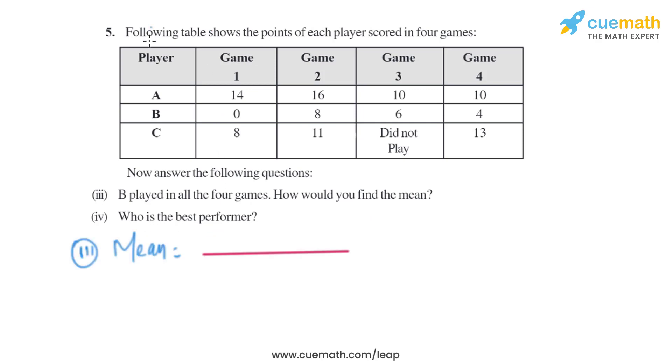We have to find the mean for B. Let's add all the values that are given: 0 plus 8 plus 6 plus 4, divided by the number of values, which is basically 4. On adding them we will get 18 divided by 4, which is the same as 4.5. So that is the mean of B.